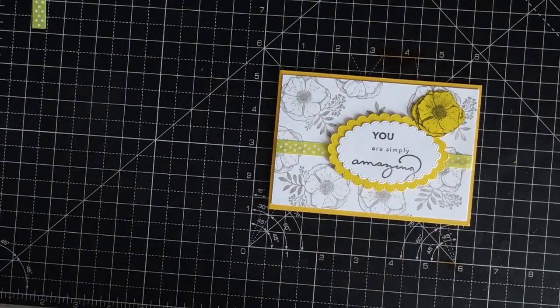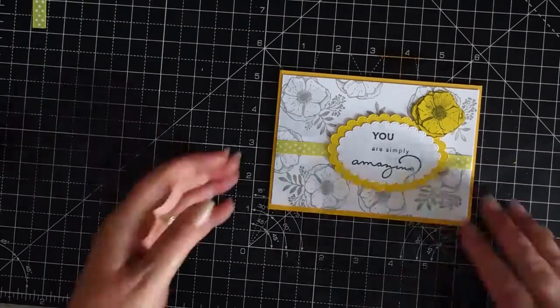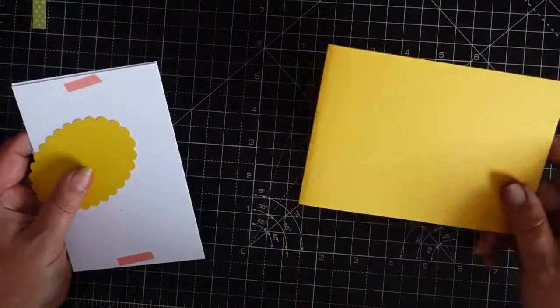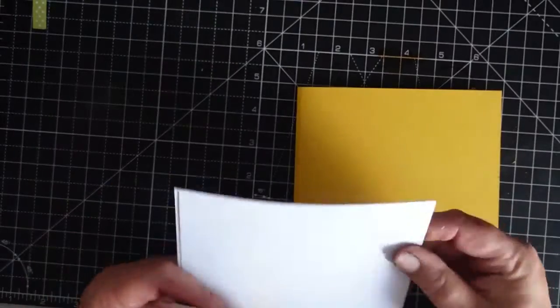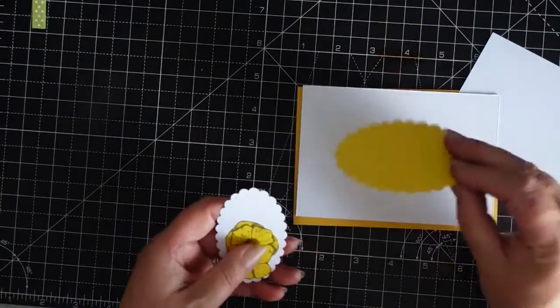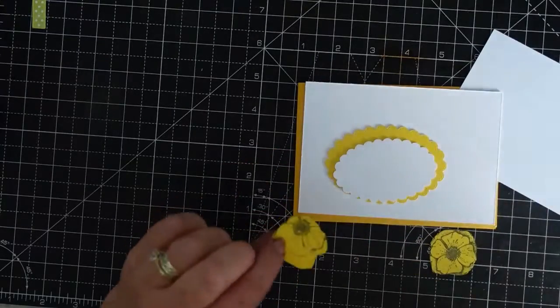Hi everyone and welcome back to Crafting Is Getting. Today we'll be making this card together, so let's get cracking. I have my base, peaceful inside, I have my mat, I have an oval, two ovals, and I've already cut the flowers out.